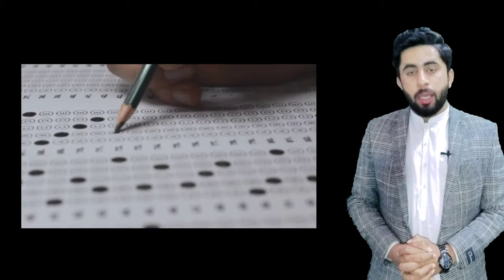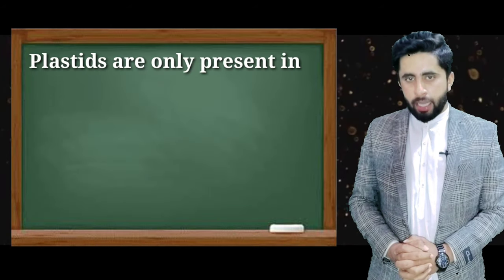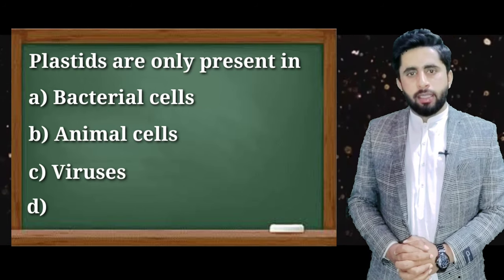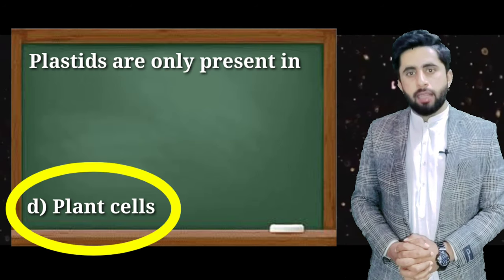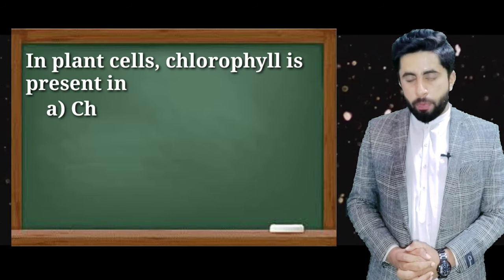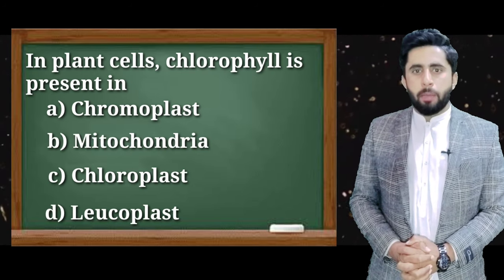اب دیکھتے ہیں important MCQs جو board کے paper میں آتے ہیں۔ MCQ 1 (MDCAT اور Bahawalpur board): Plastids are only present in: A) bacterial cells, B) animal cells, C) viruses, D) plant cells۔ درست جواب: plant cells۔ MCQ 2: In plant cells, chlorophyll is present in: chromoplast, mitochondria, chloroplast, or leucoplast۔ درست جواب: chloroplast۔